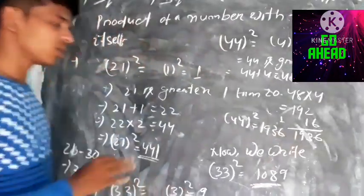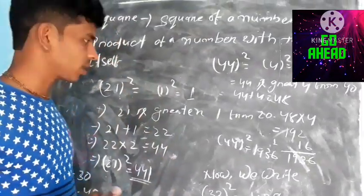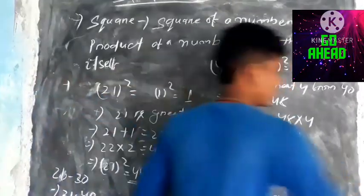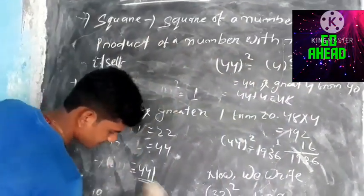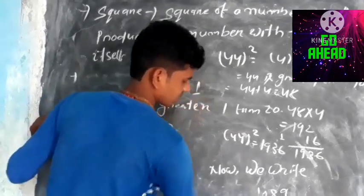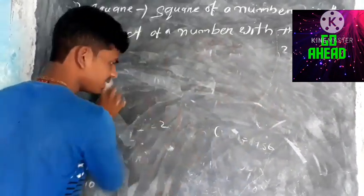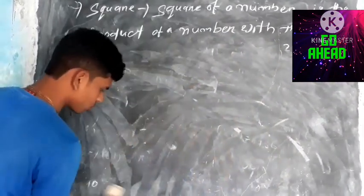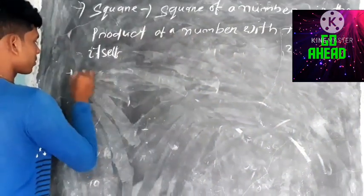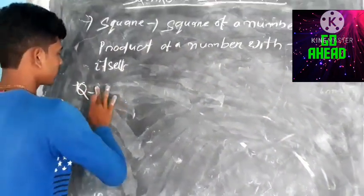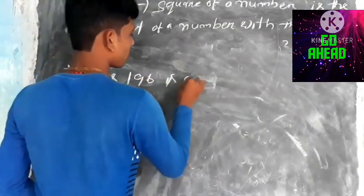It is only one procedure — you can calculate the square of all numbers this way. Now suppose another question: if the question is whether 196 is a perfect square...